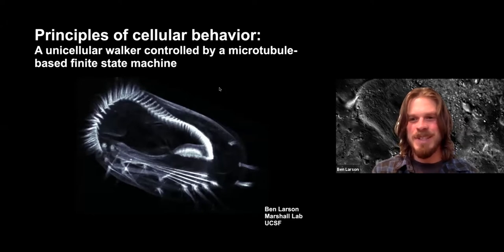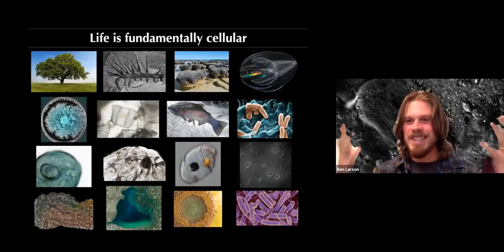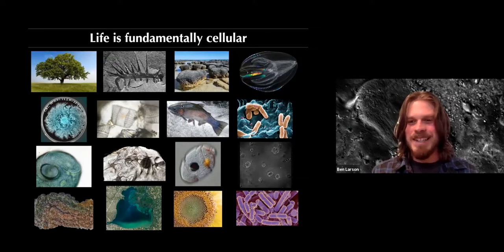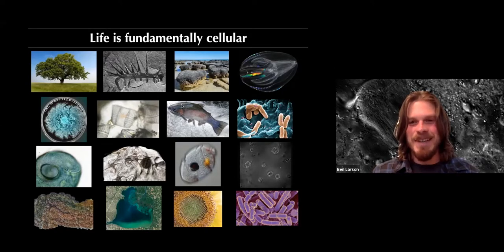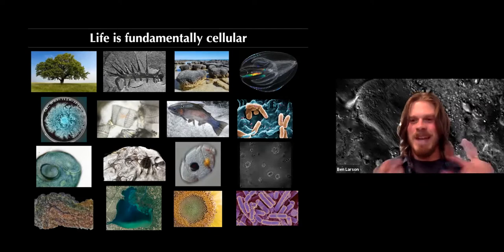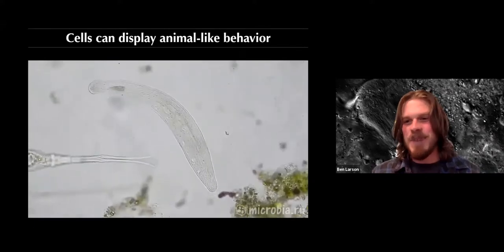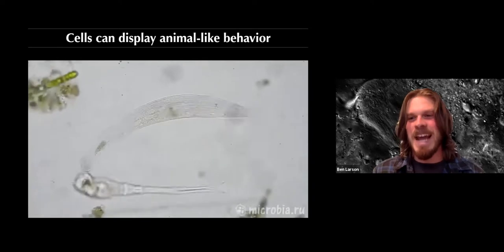It's a single cell called Euplotes that walks across surfaces. To set the stage, I'd like to emphasize that life is fundamentally cellular. Across all scales of space, time, and biological organization, we can reduce most biological processes to things that cells are doing. It's easy to get the idea that cells are simple little building blocks, but single cells in their own right are capable of some surprisingly sophisticated, even animal-like behaviors.